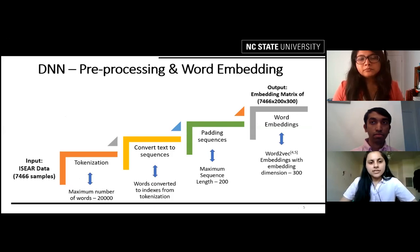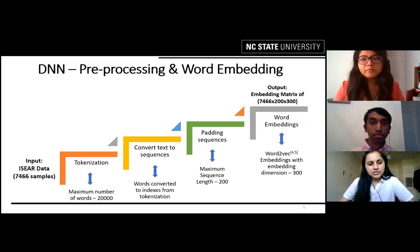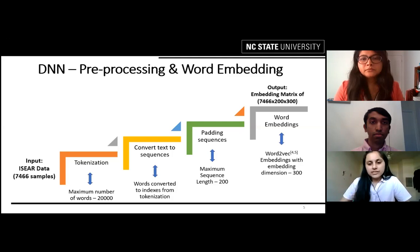Moving on to the deep neural network, we first had to prepare our data for the deep neural network layers, including preprocessing and word embedding before feeding to the DNN. The first part of preprocessing was tokenization, where all unique words from our data were assigned tokens or indexes, with a maximum of 20,000 words. Documents were then converted into sequences of tokens, which were later padded to a maximum sequence length of 200. The output of preprocessing was given to word embedding, producing embedding matrices to be fed to the DNN.